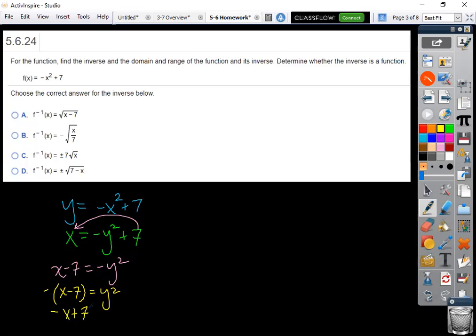Or 7 minus x if you'd rather, and then I would square root that to get rid of this square right here. So my inverse here, whoops, written a little closer.